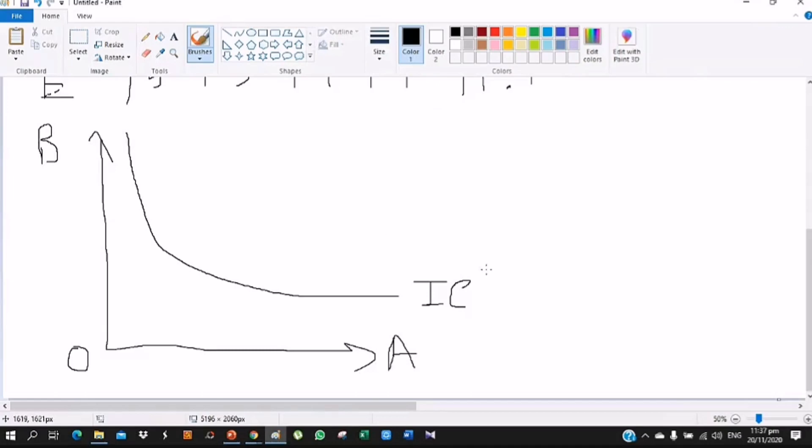The curve is convex to the origin and the slope of indifference curve is MRS - marginal rate of substitution between A and B. So we can write change in B divided by change in A.